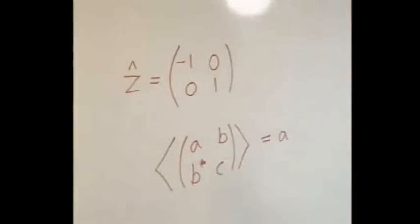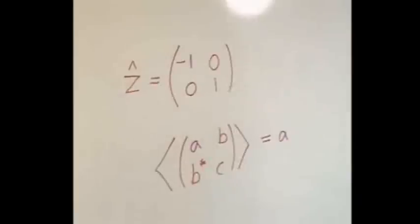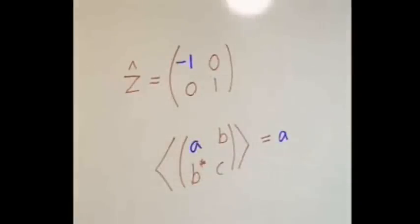Well, what's happening to its observable Z? Well, the expectation value of Z is minus 1.